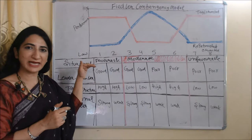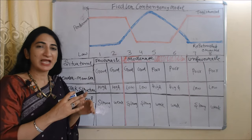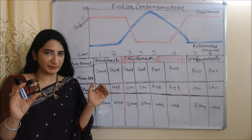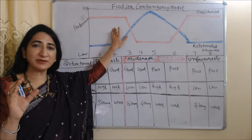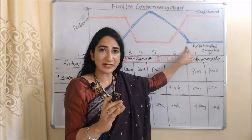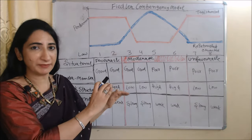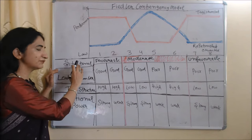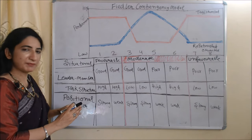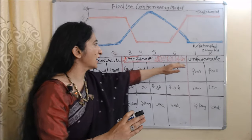Now, with the help of this diagram, we will clearly understand how we can apply this theory in a real business situation. This theory basically depends on two things: leadership styles and situational favorableness. The upper part of this diagram represents leadership styles — the red curve represents task-oriented leader and the blue curve represents relationship-oriented leader. The lower part represents situational favorableness, which includes leader-member relationship, task structure, and positional power. There are three types of situations: favorable, moderate, and unfavorable.